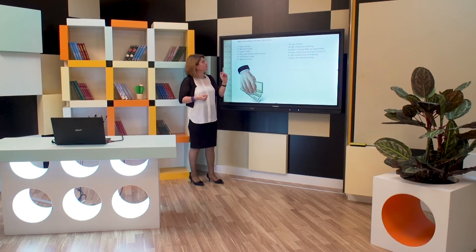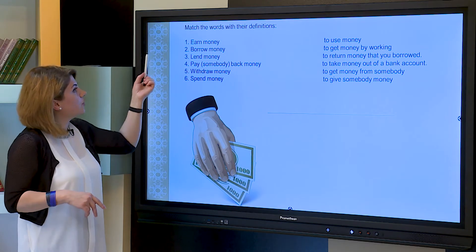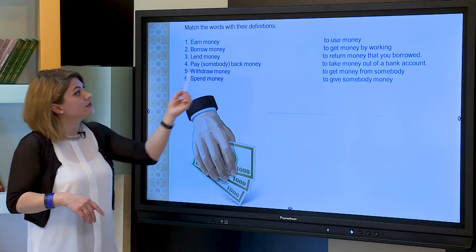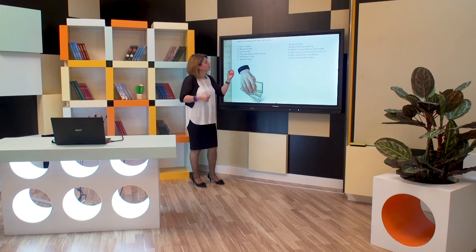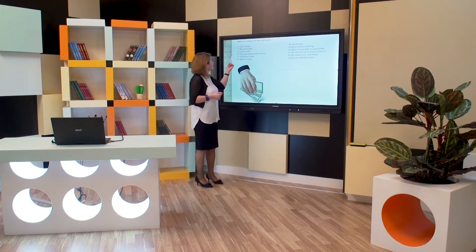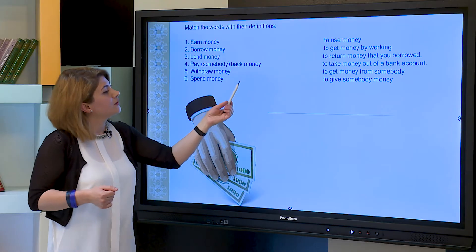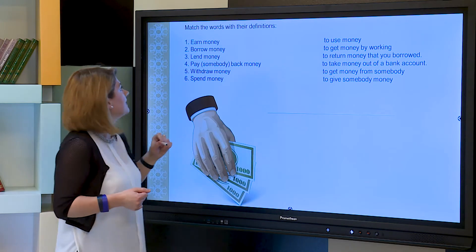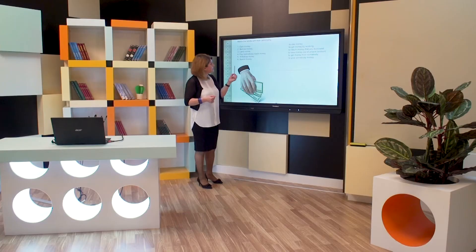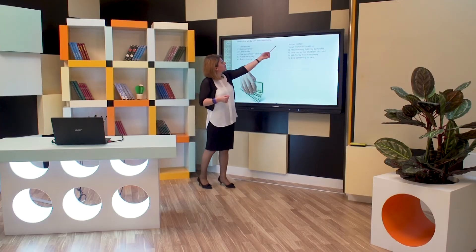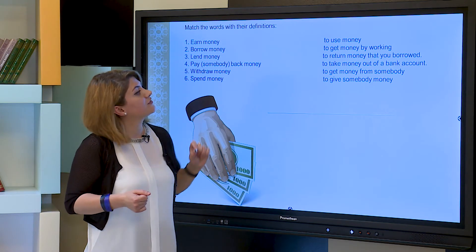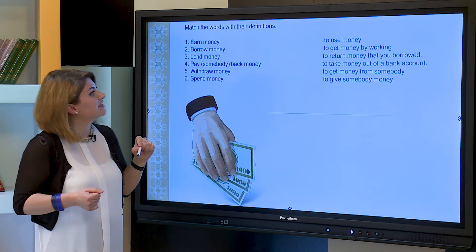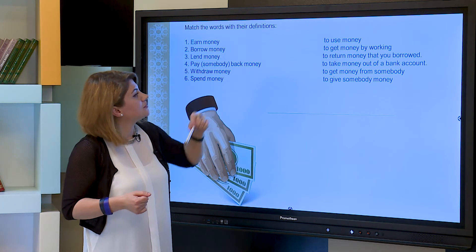Now our exercise about money. In this exercise, we match the words with their definitions. The first word: earn money — it means to get money by working. Second word: borrow money — to get money from somebody. Lend money — to give somebody money. Pay money — this means to use money. Withdraw money — to take money out of a bank account. And spend money — it means to use money.